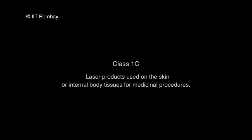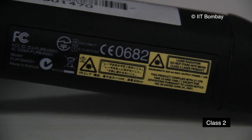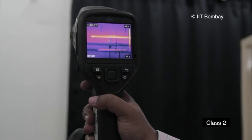Class 1C lasers are laser products used on the skin or internal body tissues for medicinal procedures. For Class 2 lasers, aversion response offers protection, but direct viewing of the beam can cause injury.